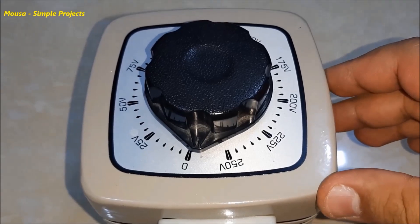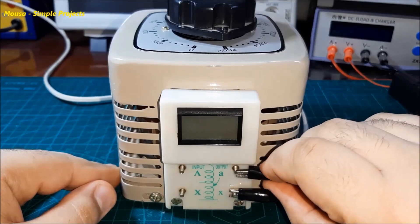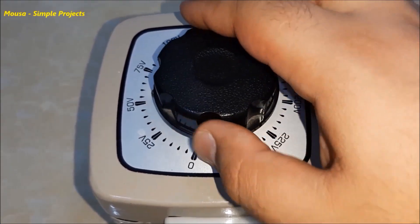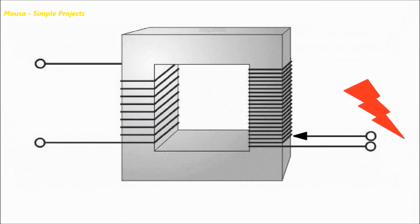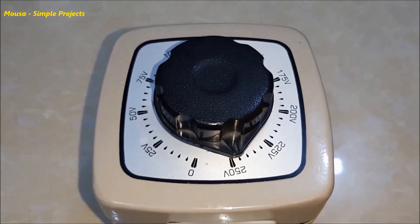There is a very important note here. When you want to connect the mains voltage at the output side of the transformer, make sure that the knob voltage selector is not on zero volts. Because in that case, you short out the mains voltage. Just put it at the maximum voltage for the first test.